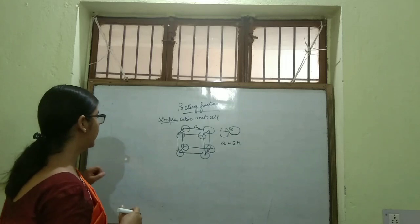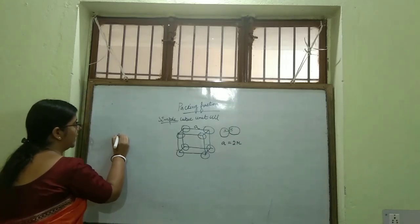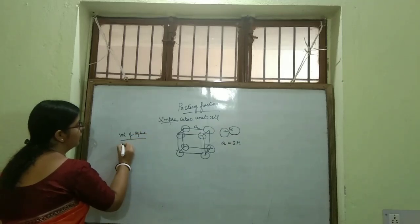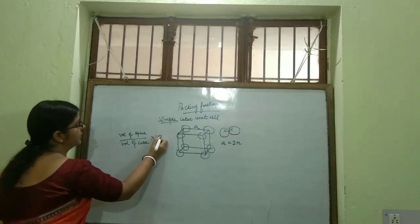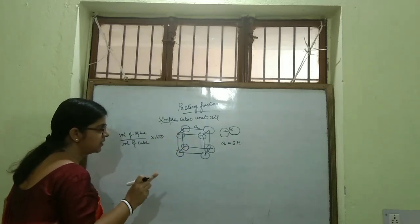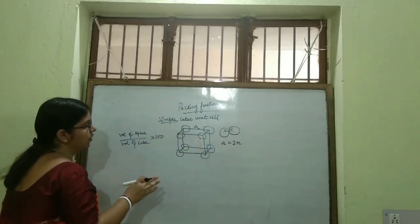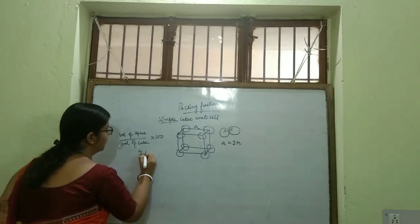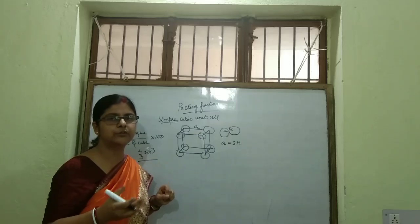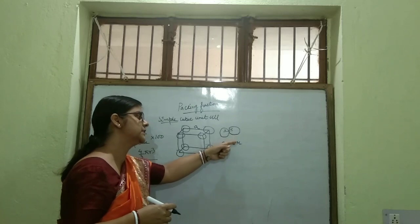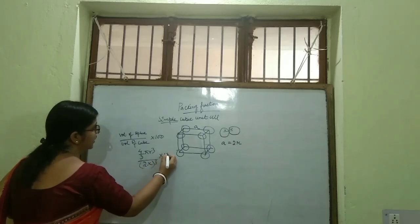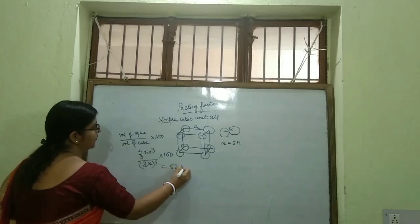How to calculate the Packing Fraction or Packing Efficiency? The formula is: volume occupied by spheres divided by volume of cube, into 100. Number of particles per unit cell will be 1, since the particles are present only at the corners. So the volume of the sphere will be (4/3)πR³, and the volume of the cube is A³. We put the value of A, writing (2R)³ instead of A³, and multiply by 100. You will be getting 52.4%.